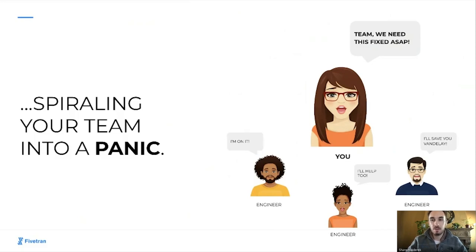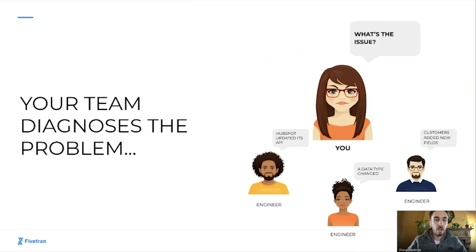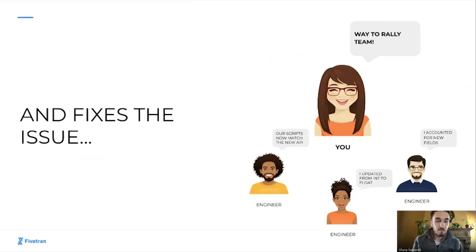This spirals your team into a panic. You round up your engineers and say we need to get this fixed as soon as possible — our customers are angry and we don't want to risk losing them. Because you have a capable and competent team, they're able to diagnose the problem. It turns out a number of things happened: the data source updated its API, which impacted the mapping defined in your scripts for extracting data; a data type changed in the data source, also affecting that logic; and customers added new fields — new columns to the data source that you weren't aware of and didn't accommodate for in the initial logic. Despite all of this, your team fixes the issue: scripts are updated to match the new API, the data type is updated from int to float, and you've accounted for those new fields.